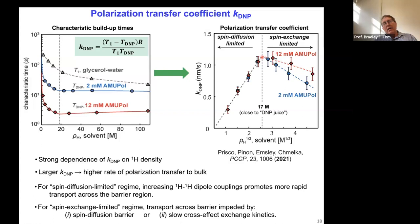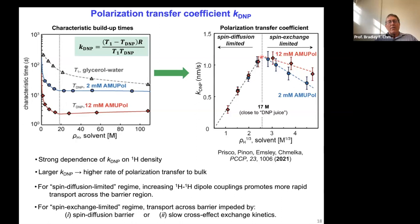In the spin-diffusion limited regime, increasing proton-proton dipole couplings promotes more rapid transport across the barrier — basically sucking it across. In the spin-exchange limited regime, transport is impeded by the spin diffusion barrier itself and slow cross-effect exchange kinetics, where a new bi-radical design might be helpful for different conditions. What's really nice is that the peak of this volcano plot is very close to what DNP juice actually is — with no adjustable parameters, the calculation shows they've essentially reached the optimum for the conditions under which solution-phase DNP is used.